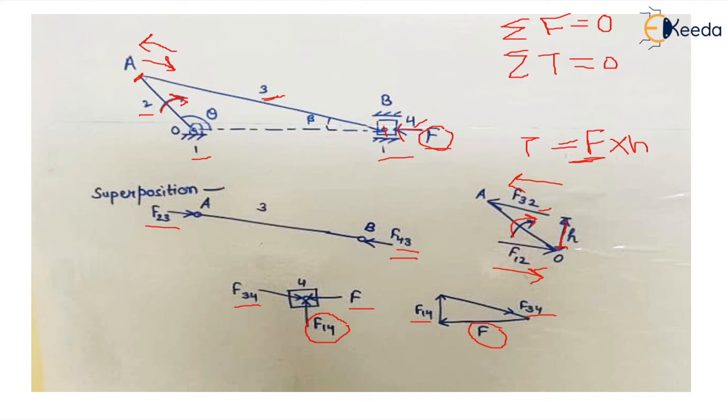This question can also be given vice versa. You may be given the value of F and asked to find the value of the torque T which is being applied on the crank. So we'll do the question in reverse: first we'll talk about body 4, then body 3, and then we'll come to body 2.